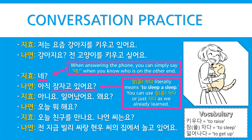아니요 — 'No.' 일어났어요 — 'I woke up.' 왜요? — 'Why?' 오늘 뭐 해요? — 'What are you doing today?' 오늘 친구를 만나요 — 'I meet a friend today,' or 'I will meet a friend today,' or 'I'm meeting a friend today.' 나연 씨는요? — 'How about you, 나연? Or, as for you?' 전 지금 빌리 씨랑 현우 씨의 집에서 놀고 있어요 — 'As for me, right now, I am hanging out with Billy at 현우's house.'